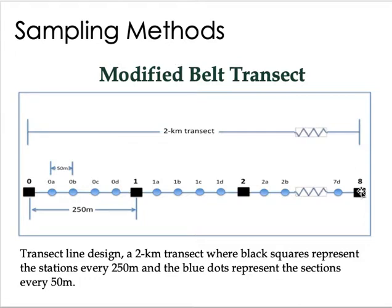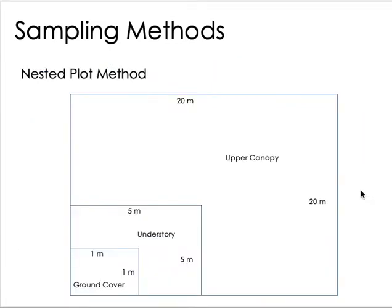Along the transect, researchers spot and record birds, establish mist nets for birds and bats near the transect line, and search for amphibians and reptiles in the area. Plant sampling is also done at specific points along the transect, such as at 0.1 km, using a nested plot method.